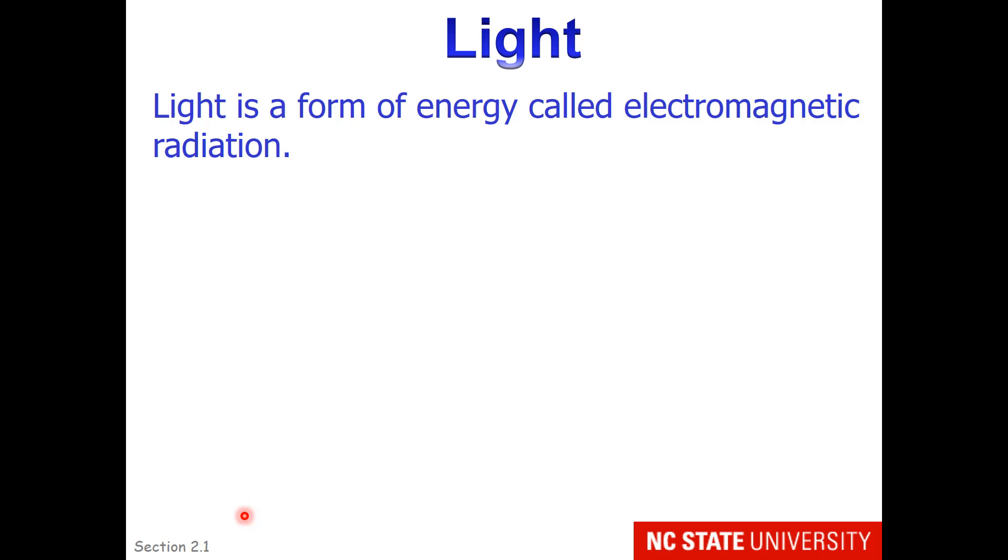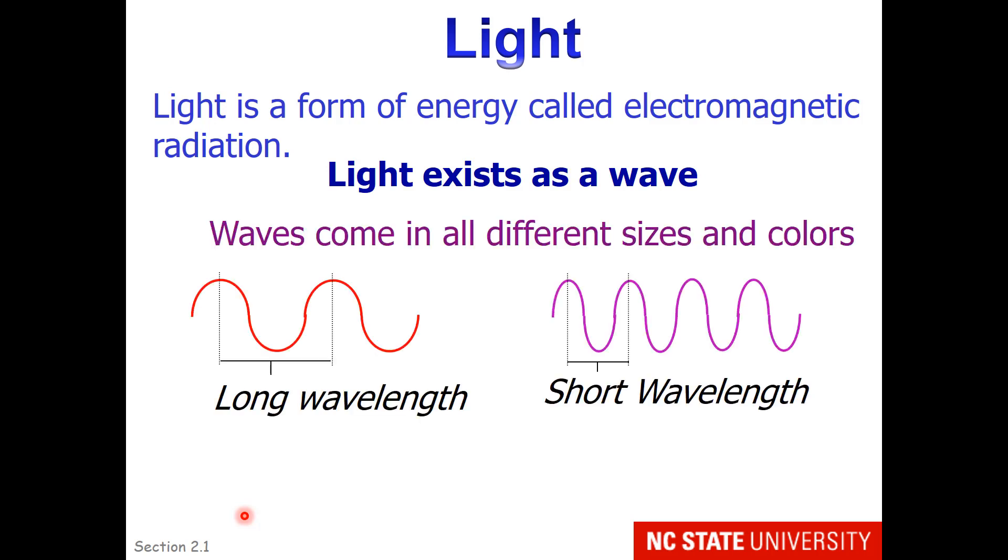So light is a form of energy called electromagnetic radiation. And light, when it travels, travels as a wave, much like the waves you see at the beach. Waves are going to come in all different sizes and colors. You can have long or short wavelengths. The wavelength is defined as the distance from peak to peak. So we see here that red light has a longer wavelength, and purple light, or violet light, has a shorter wavelength.